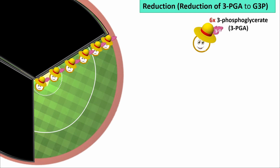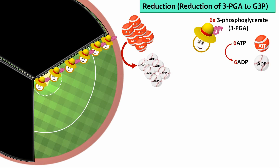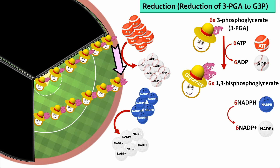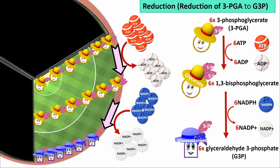The second step of the Calvin Cycle is reduction, or reduction of 3-PGA to G3P. Six 3-phosphoglycerate, or 3-PGA, use six ATP and convert to six 1,3-bisphosphoglycerate. Six 1,3-bisphosphoglycerate use six NADPH and convert to six glyceraldehyde 3-phosphate, or G3P.